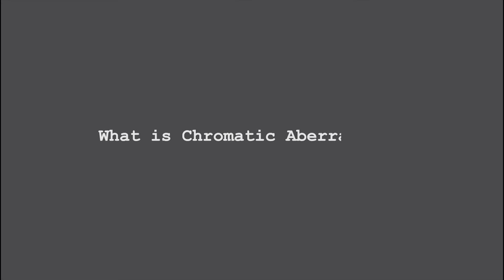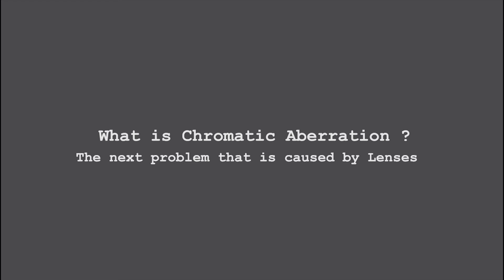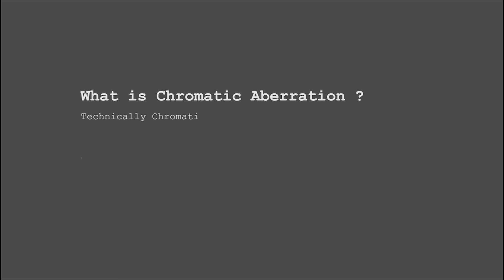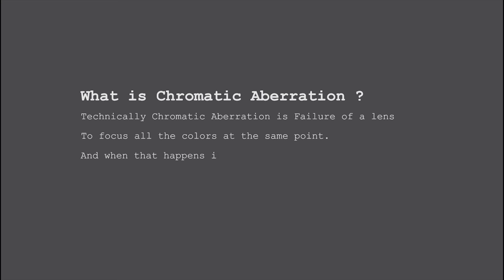The next problem caused by lenses is chromatic aberration. If you have been taking photos for a while, you may have seen this kind of image. It is called chromatic aberration, or some may call it purple fringing or color fringing. Technically, chromatic aberration is the failure of a lens to focus all colors at the same point, and when that happens, it is called chromatic aberration.